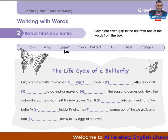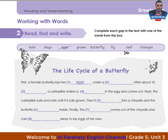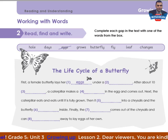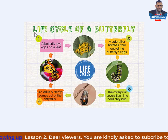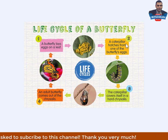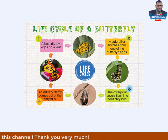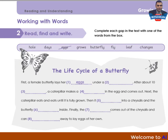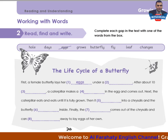The word choices are: whole, days, eggs, grows, butterfly, fly, leaf, life changes. Let me show you the life cycle of a butterfly. A butterfly lays eggs on a leaf or under a leaf. A caterpillar hatches from one of the butterfly's eggs. The caterpillar covers itself in a hard chrysalis. An adult butterfly comes out of the chrysalis. Now take your time to complete each gap in the text, then come back to check your answers.